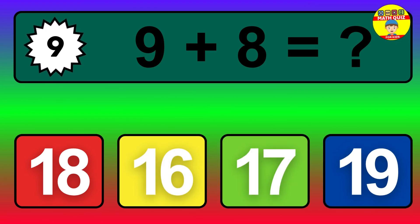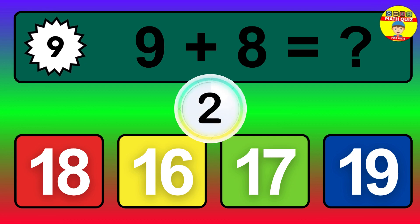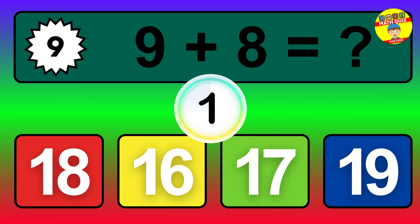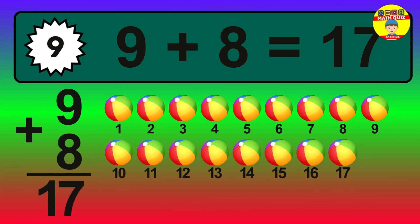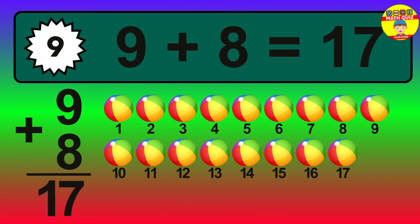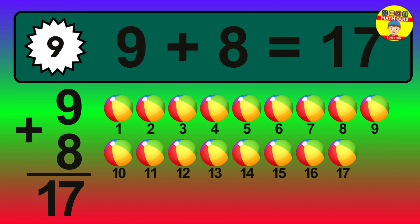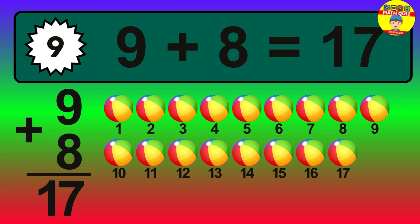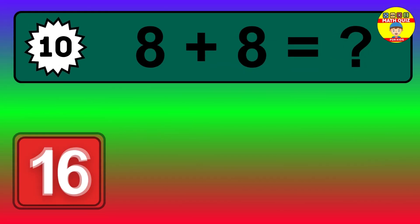Question 9. 9 plus 8 equals what? The answer is 9 plus 8 is 17. Let's count it: 1, 2, 3, 4, 5, 6, 7, 8, 9, 10, 11, 12, 13, 14, 15, 16, 17.